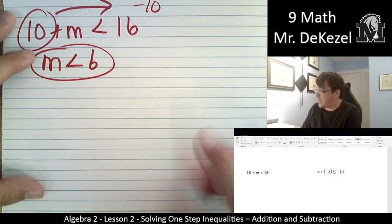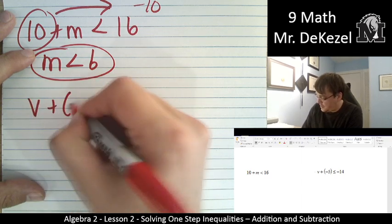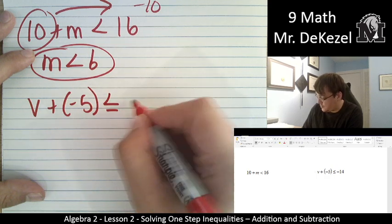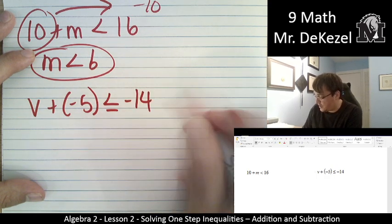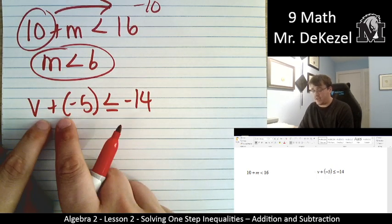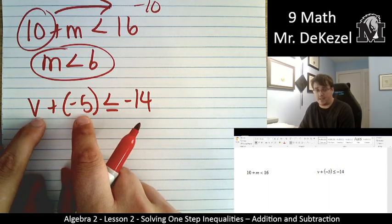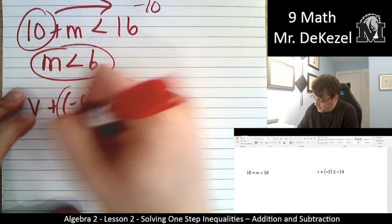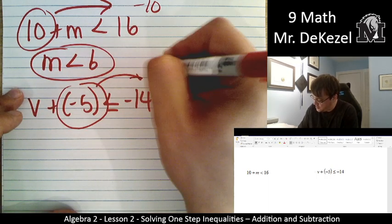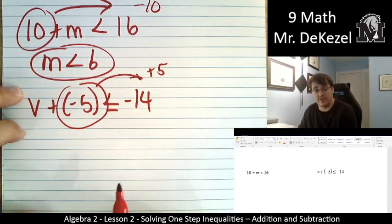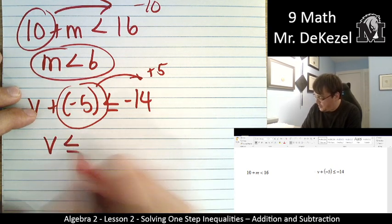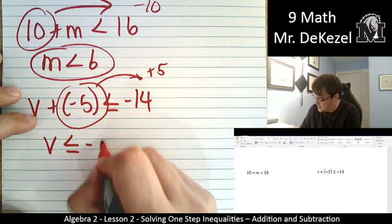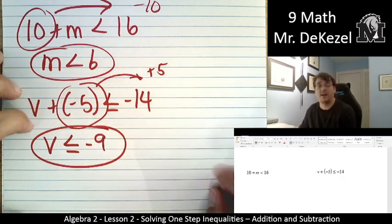And our last one, v + (-5) ≤ -14. Okay. This is just subtracting. Adding a negative is subtracting. So I'm going to move this whole thing over to the other side. That's just adding it to the other side. So v ≤ -14 + 5 is -9.